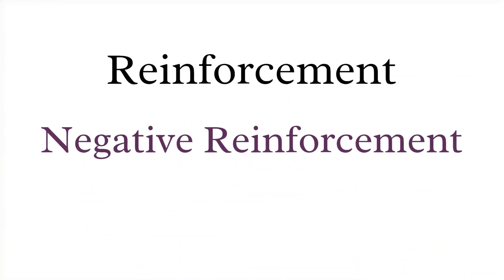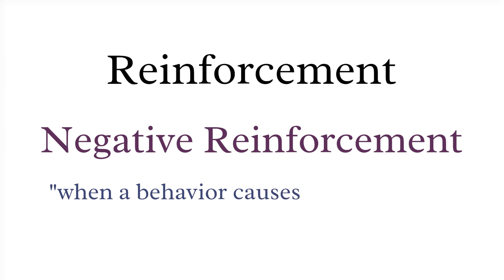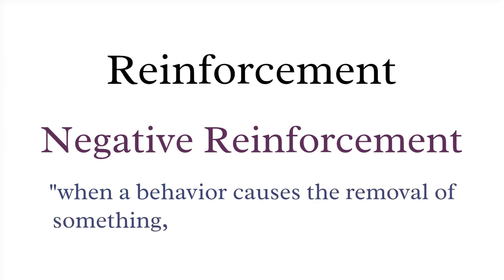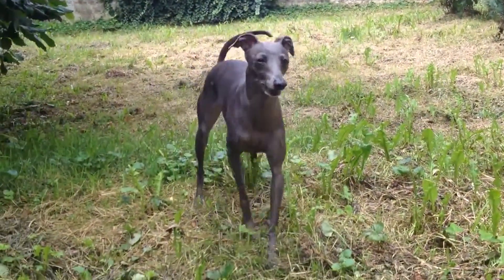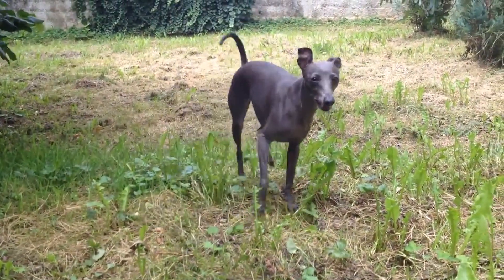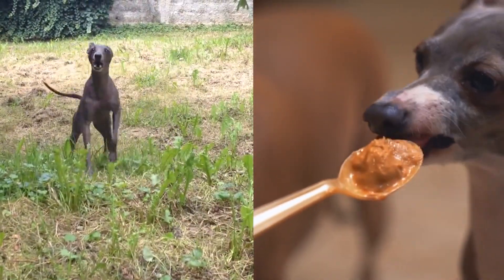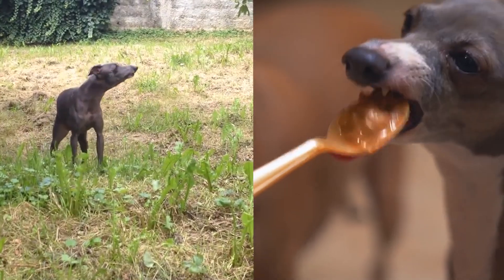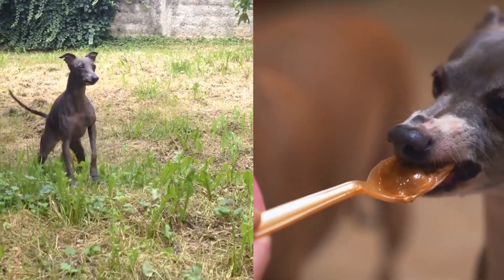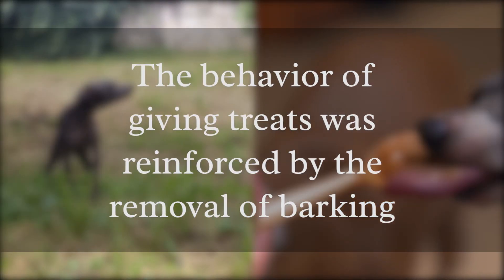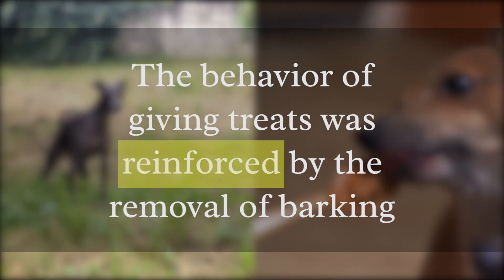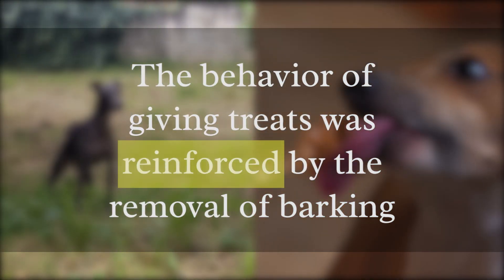On the other hand, negative reinforcement is when a behavior produces the removal of something negative or undesired from the environment, which increases the rate of that behavior. As an example, a dog's barking bothers his owners. The owner, annoyed by the barking, gives the dog a treat to make him stop. The removal of the dog's barking has increased how many times the owners give him treats. In this way, the behavior of giving treats was negatively reinforced by the removal of barking.